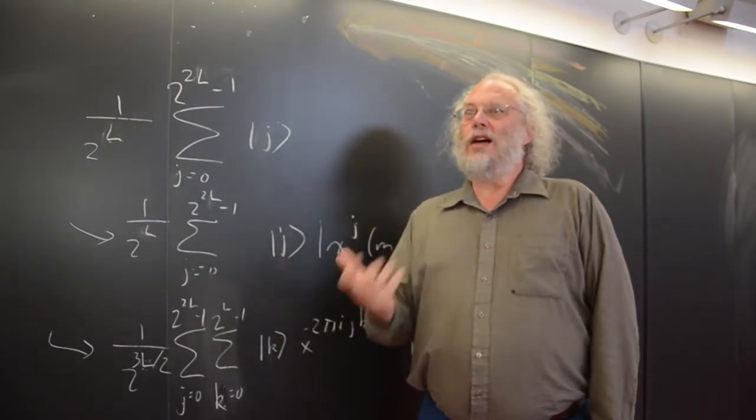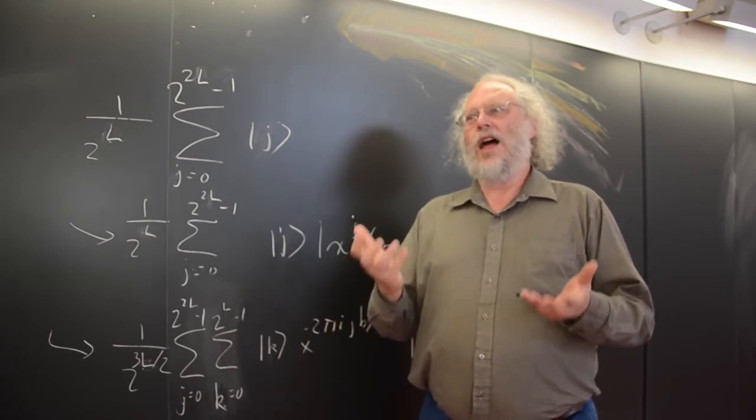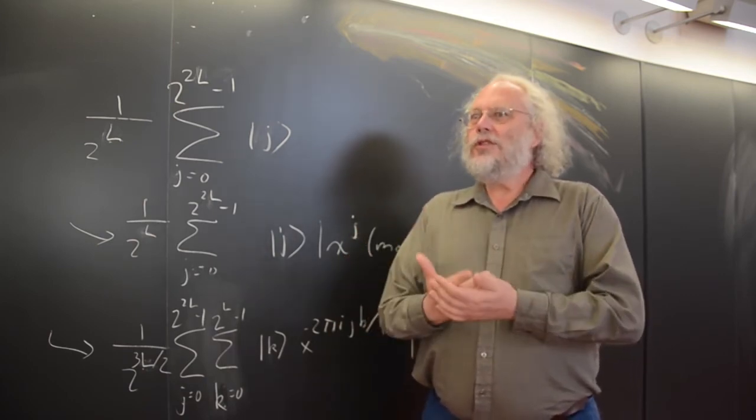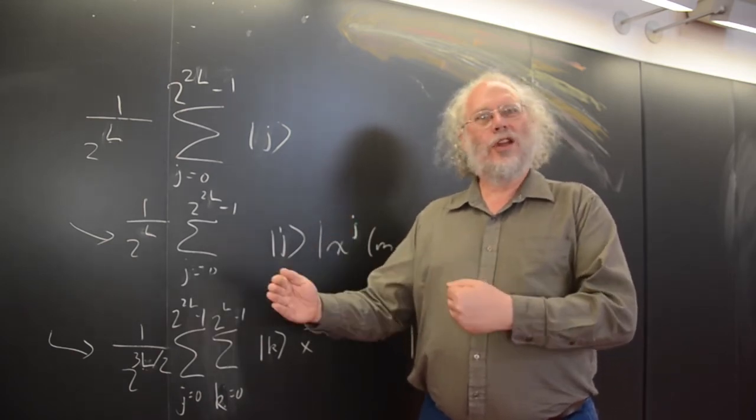So the way the quantum factoring algorithm works is you take the number you want to be factored, and you can turn, using number theory, the problem into a problem of finding the period of a really long sequence.